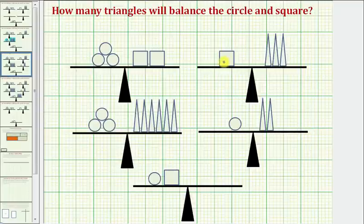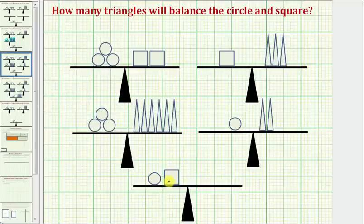Well, if we know that one square balances with three triangles, and one circle balances with two triangles, then one circle and one square would balance with a total of five triangles.